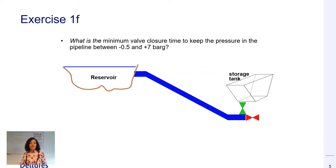Let's assume we have the same gravitational system as before and that we are trying to calculate the minimum valve closure time to keep the pressure in the pipeline between minus 0.5 and 7 bar gauge. Here we are asking ourselves what are the operational conditions at which the pressure wave generated in the system due to a valve closure don't exceed allowable pressure criteria.